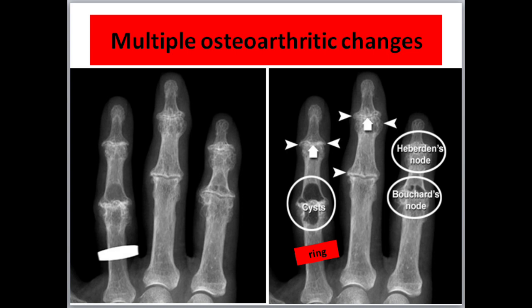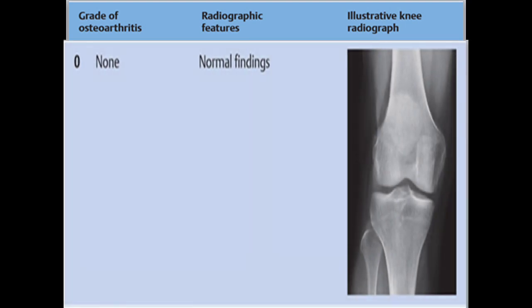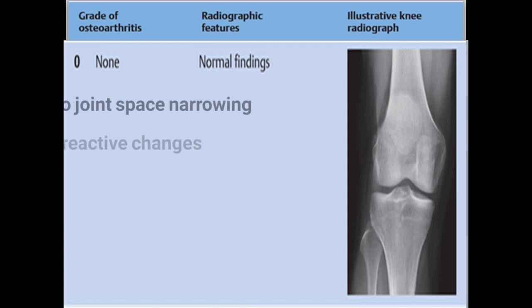This picture is an example of multiple osteoarthritis changes: large osteophytes have formed at the joints of the fingers. These osteophytes correspond to the clinical finding of bone swelling at the distal interphalangeal joints, called Heberden's nodes, and at the proximal interphalangeal joints, called Bouchard's nodes. The joints are severely narrowed and large subcortical cysts have also formed. In this patient with severe osteoarthritis of the finger joints, the ring could no longer be removed.